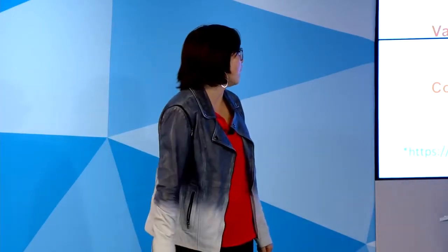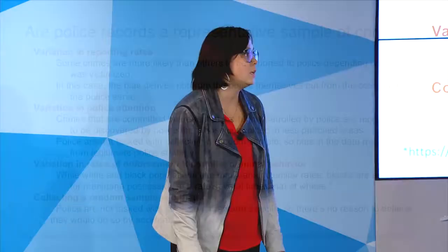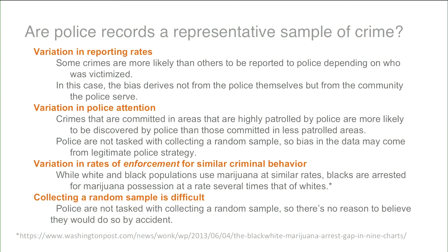The last source of bias — and as a statistician, one of the most convincing — is that it's simply hard to collect a representative sample. Statisticians and survey sampling experts have spent the better part of a century thinking carefully about how to do this, and it doesn't happen by accident. It takes a lot of effort and planning. Legitimate police practice can result in a biased sample simply because police are not tasked with collecting a random sample.